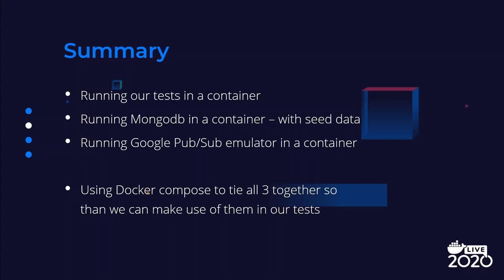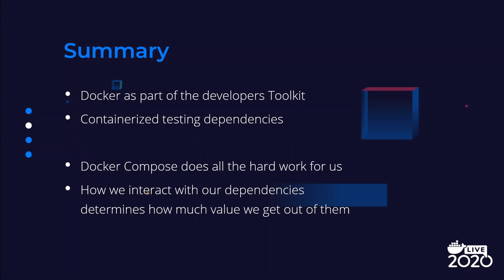We've seen how we can run our tests in a container, how we can run our dependencies in containers — both a MongoDB and a Google PubSub emulator — and we know that we can run any of our dependencies in containers such as a SQL database or a Redis cache. We've also seen how we can use Docker Compose to put those together and make use of them when we run our tests. I really want to emphasize just how useful Docker is as part of the developer's toolkit. We can containerize our testing and development dependencies, and Docker and Compose really do all of the hard work for us. How we interact with our dependencies determines how much value we get out of them, so we should definitely be testing that.